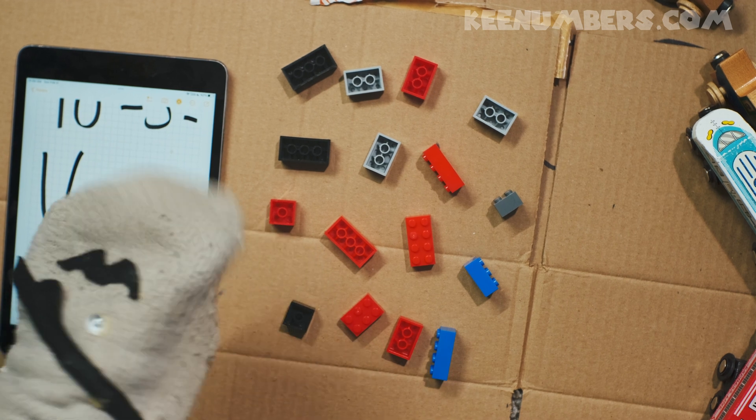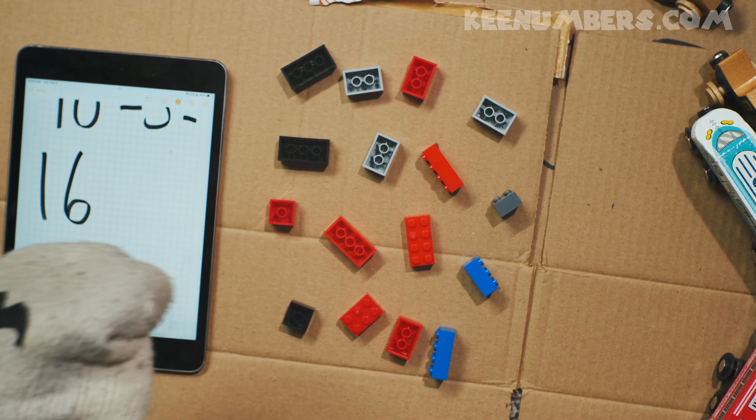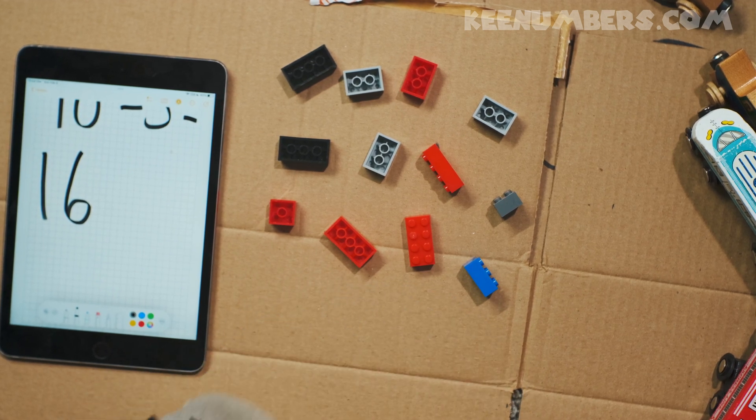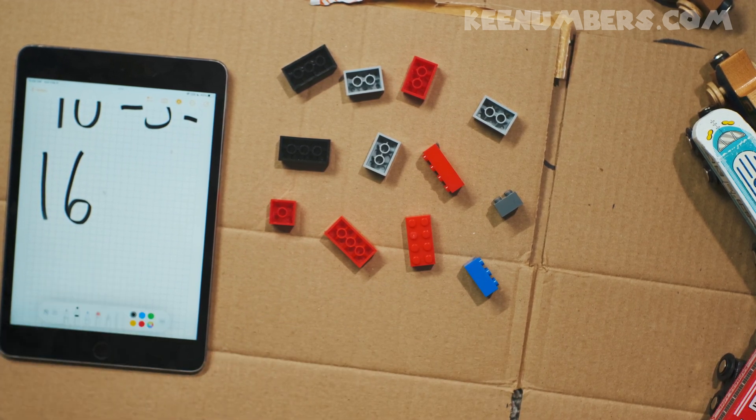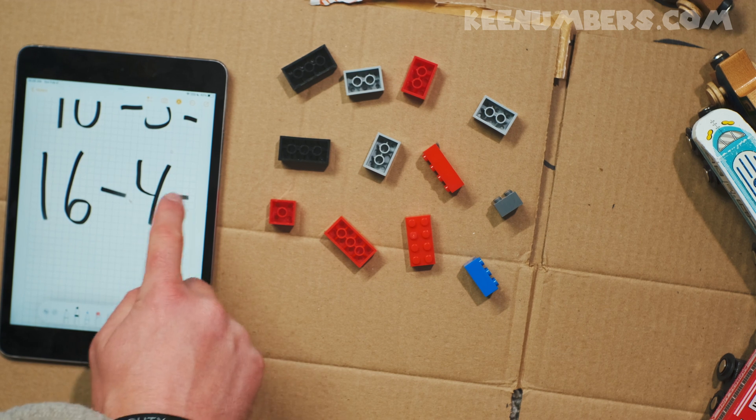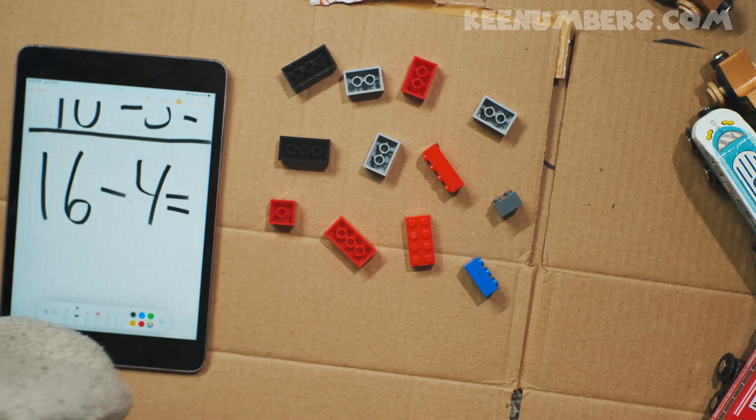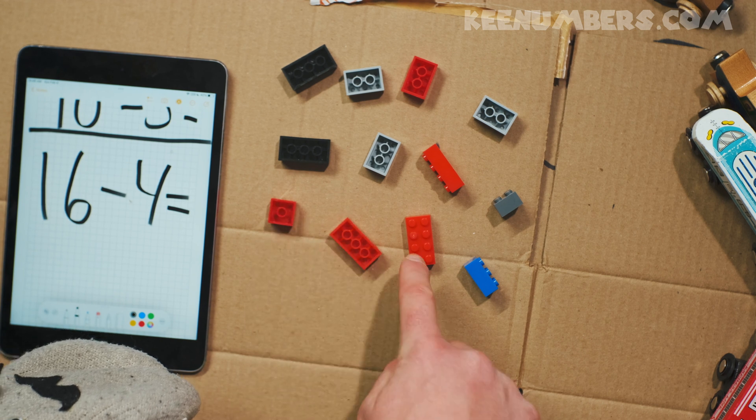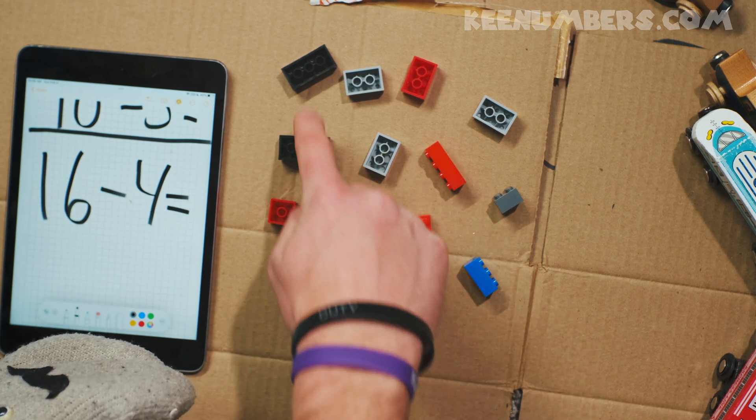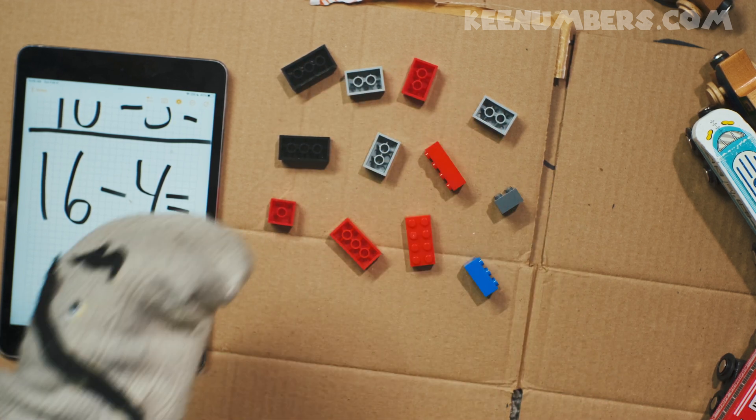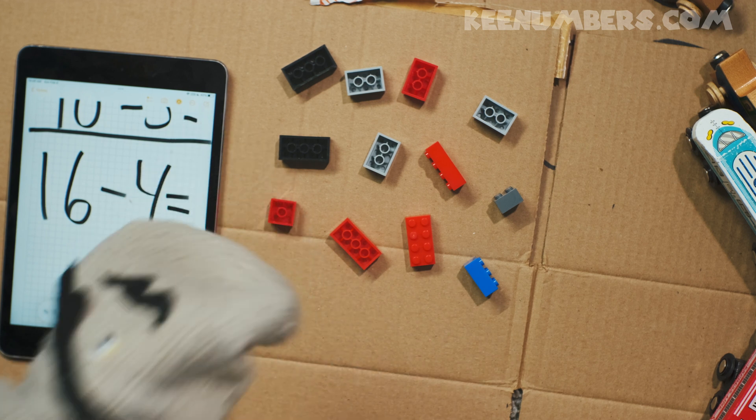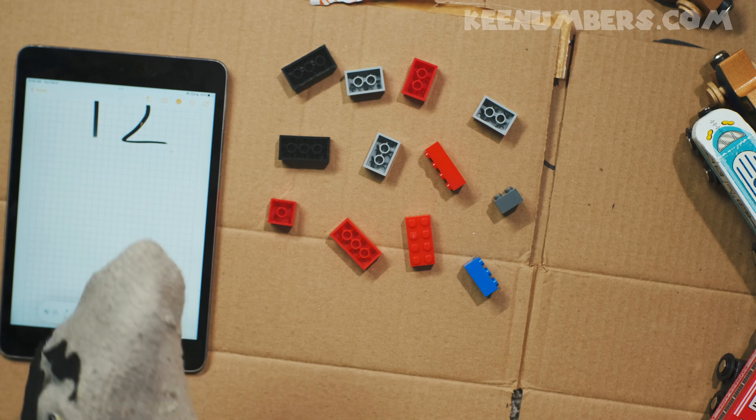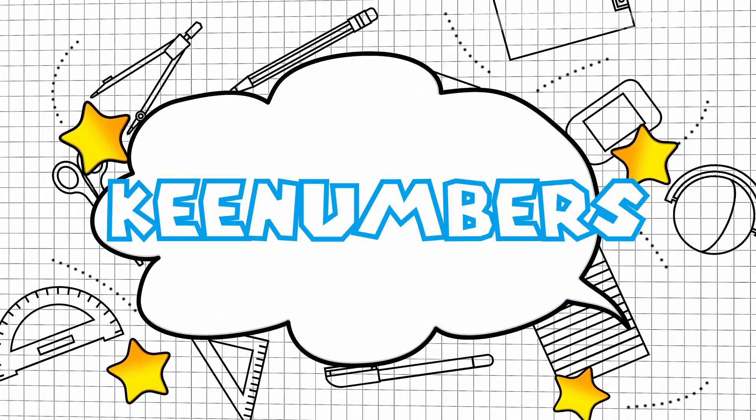We're going to subtract. If we have sixteen bricks and I take away four, how many are left? Sixteen minus four. What is that? Hmm. We have one, two, three, four, five, six, seven, eight, nine, ten, eleven, twelve. Twelve! Yarr, har, har. Should we do another one, Pirate Sam? Yes, let's do another one. Let me know first. This is for a microphone.